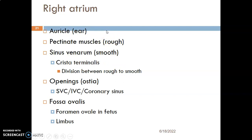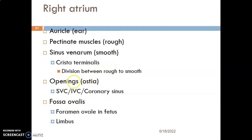The right atrium has three openings. It has an opening for the superior vena cava, which has no valve because blood is coming downward from above, so gravity does not act against it. The inferior vena cava has valves because blood is coming upward against gravity, requiring valves to ensure unidirectional flow. The coronary sinus is the major venous drainage of the heart. So these three open into the right atrium: superior vena cava, inferior vena cava, and coronary sinus.